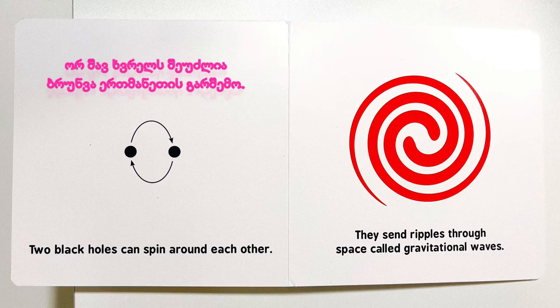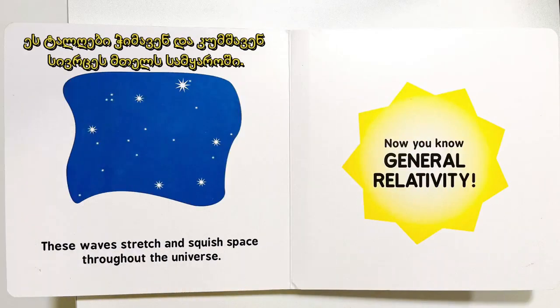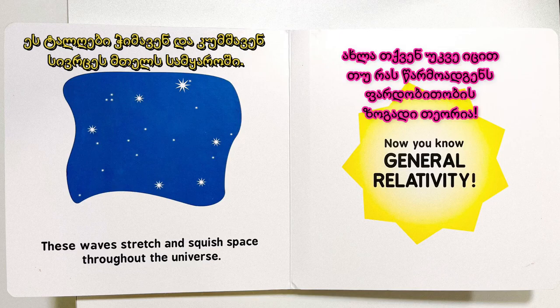Two black holes can spin around each other. They send ripples through space called gravitational waves. These waves stretch and squish space throughout the universe. Now you know general relativity.